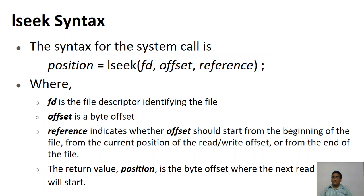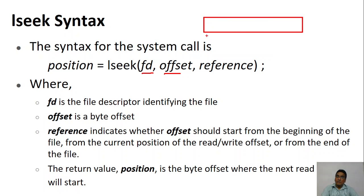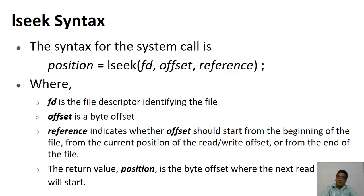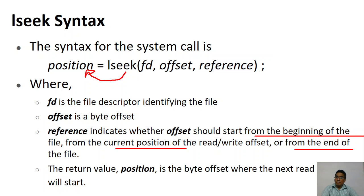So what does the LSEEK system call do? LSEEK will position the pointer at a random location — whichever offset we specify, we can randomly place the position within the file. The syntax for LSEEK is as follows: we need a file descriptor, then we specify the offset (how much distance it has to move), and the reference — with respect to the beginning of the file, the end of the file, or the current position. LSEEK returns the position within the file from where read or write operations will be performed.